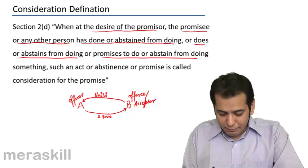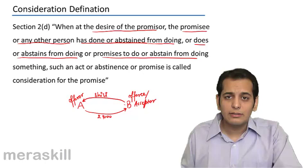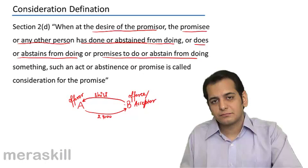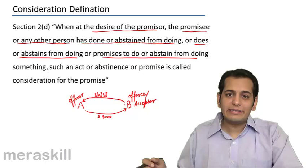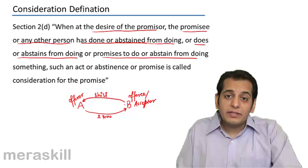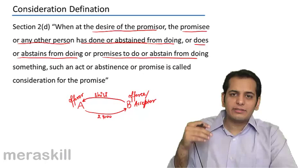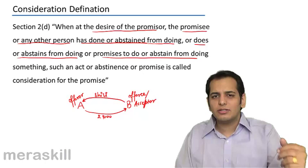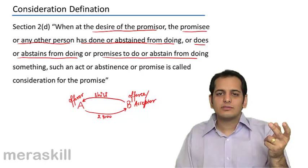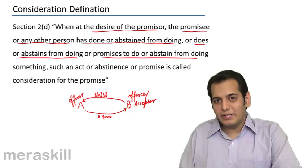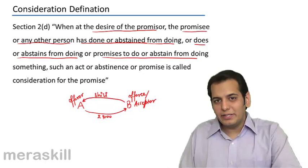A's promise — where A promises to pay B 1000 rupees — is what B is receiving. So B is getting something in return, meaning he is giving something and getting something. At the same time, when B is giving something — that is, giving a shirt to A — A is also getting something. So the promise of A is consideration for B, and the promise of B is consideration for A.